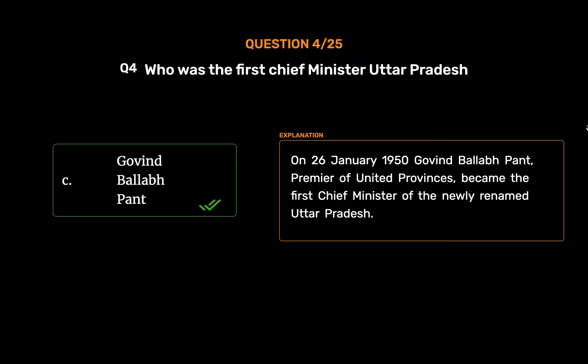On 26 January 1950, Govind Vallabh Pant, Premier of United Provinces, became the first Chief Minister of the newly renamed Uttar Pradesh.